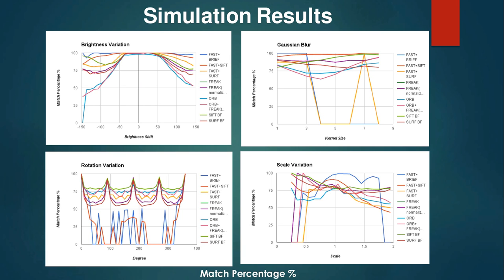The first metric evaluated is match percentage. As brightness is varied from minus 150 to 150, FAST and BRIEF give a very consistent performance, whereas ORB has the lowest and worst performance. As the kernel size is varied with different sizes of Gaussian blur, FAST and SIFT maintain consistent performance, while all other algorithms either have a lower performance or very inconsistent performance, like ORB or FAST and BRIEF.